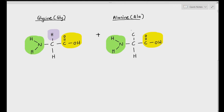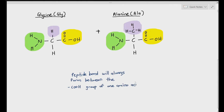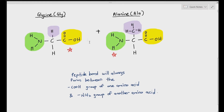On the right side, I've drawn out an alanine, and alanine has a different R group from glycine. You don't have to memorize the R groups. So just to repeat: the peptide bond will always form between the C-O-O-H group of one amino acid and the N-H2 group of another amino acid.